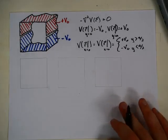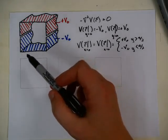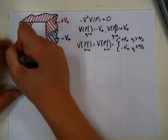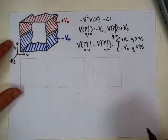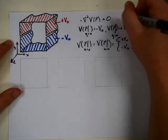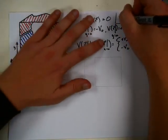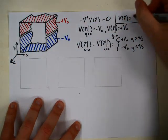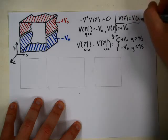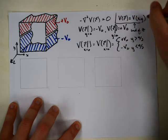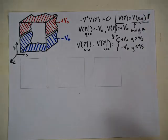The first thing we can do is note that if we define our coordinate axis with Y, X, and Z coming out, then our solution should be independent of Z — it shouldn't matter where along the tube we are. So V of R should be equal to V of X and Y, independent of Z. This uses one of the symmetries of the problem.